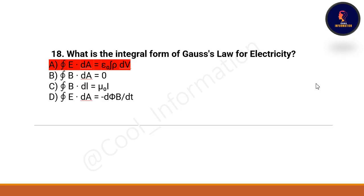Eighteenth question: what is the integral form of Gauss's law of electricity? The correct option is A — ∮E·dS = (1/ε₀)∫ρ dV. All these laws are very important; do not miss any one. Go through all of these laws if you haven't already.